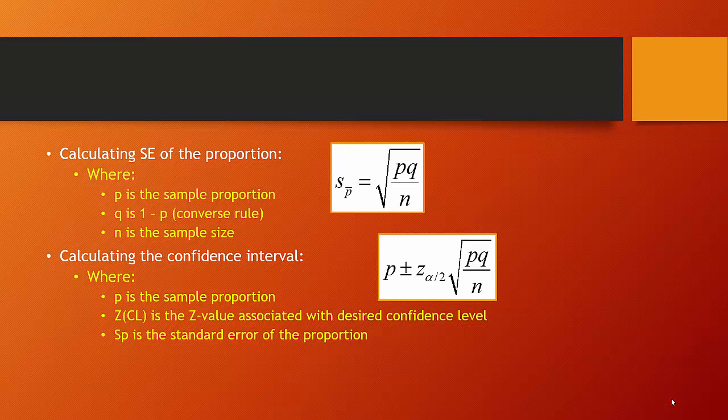So here's how we calculate the standard error of our proportion. Remember, p is the sample proportion that we've observed, q is one minus p. So if we have 30% in our proportion, that means we have one minus 30%, or one minus 0.3, or 0.7, or 70% in our fail-to-succeed condition. In that case, p would be 0.3 and q would be 0.7, and n is just the sample size you've observed.